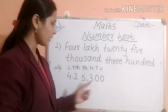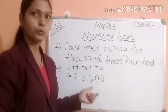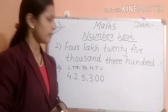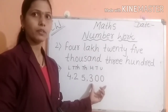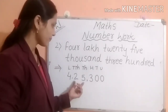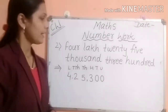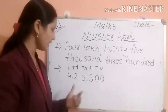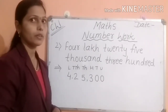After completing each place value family, you should put the comma there. Means: units family, then thousands family, then lakh family. Now this number we have written in figure. Noted?